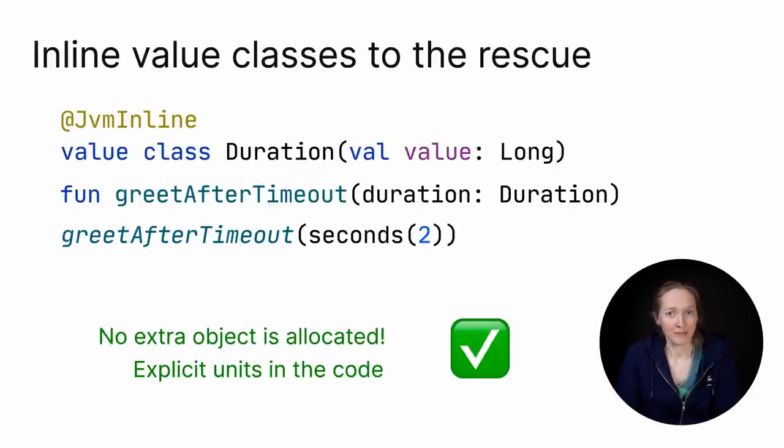That's what I mean by saying that inline value classes combine the performance of primitive types and type safety of regular classes. No extra object allocated, it's primitives under the hood. And explicit type units in the code demonstrate the type safety. Duration is represented by a separate type, it's not any number.